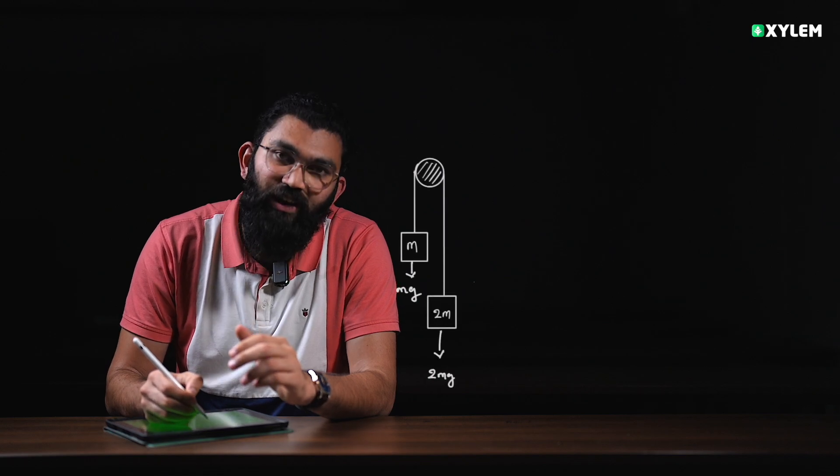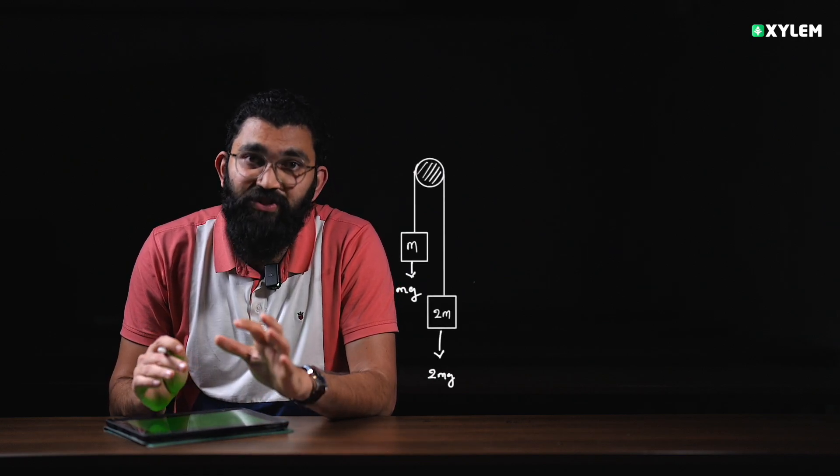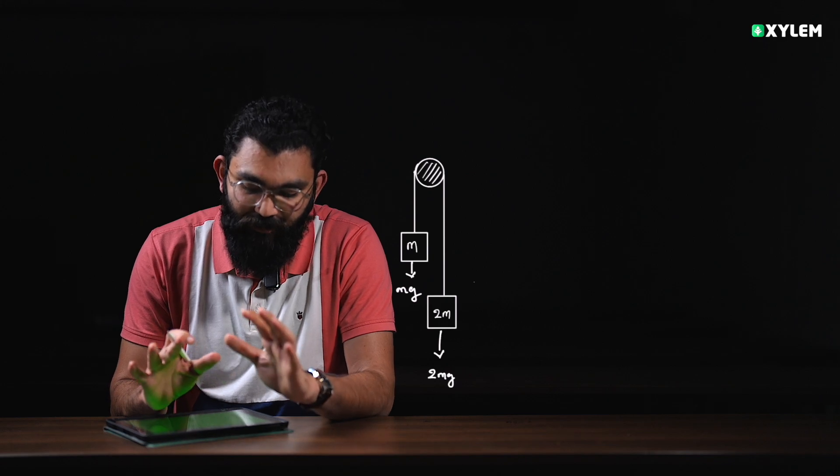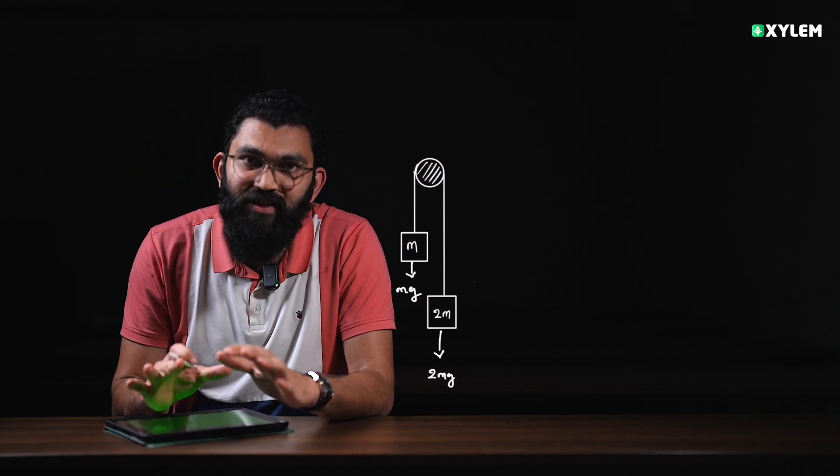Hi all. In this lesson we are going to discuss pulley system questions — how we can solve them in difficult cases. We will start with finding the acceleration and string tension. As you can see, the pulley is massless and frictionless, and the string is inextensible. The pulley is fixed, and we are going to discuss fixed pulley system questions.